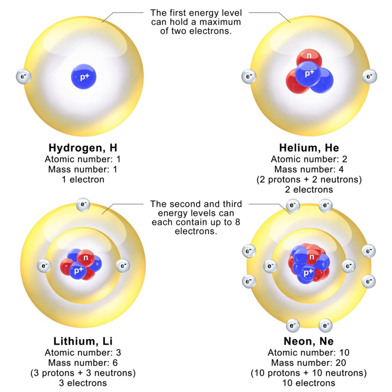Assuming with Bohr that quantized values of L are equally spaced, the allowed orbit radius at any n is r_n = n² ħ² / (Z k_e e² m_e). The smallest possible value of r in the hydrogen atom is called the Bohr radius, equal to r_1 = ħ² / (k_e e² m_e) ≈ 5.29 × 10⁻¹¹ m.